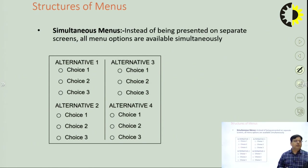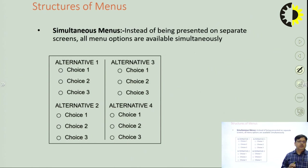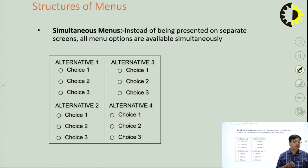The third category is simultaneous menus. In simultaneous menus, instead of being presented on separate screens, all menu options are available simultaneously — Alternative 1, Alternative 2, Alternative 3, and Alternative 4 are all visible in a single screen. This is very comfortable for the user, but for a large number of menus, you cannot present everything in a single screen as it creates a problem by consuming too much window space. This is not a good choice for large numbers of menus; it works best when the number of menus is limited.